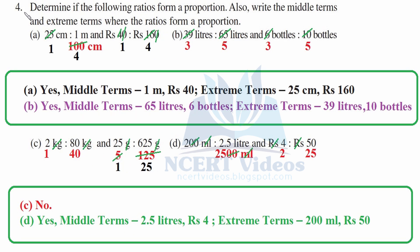Question 4: Determine if the following ratios form a proportion — that is, two ratios have to be equal. This is what proportionality is: just the comparison of two ratios. Also write the middle terms and extreme terms where the ratios form a proportion. The middle terms are the second and third values, and the first and fourth are called extreme terms.